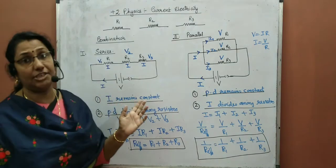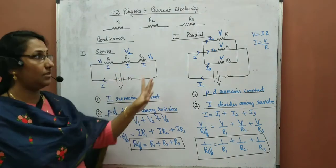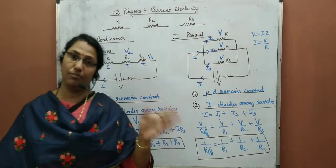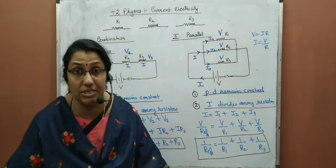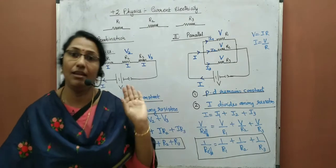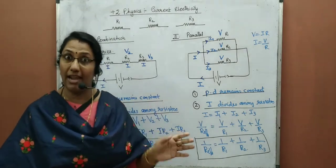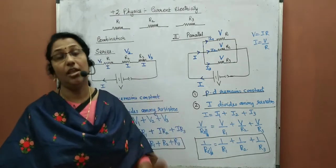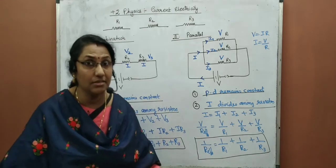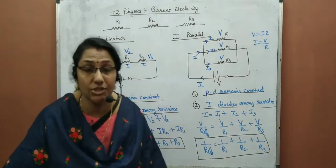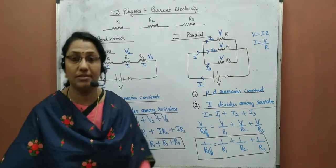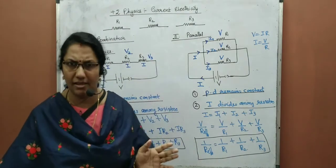To summarize: in series, current is the same, potential divides, and the effective resistance is R1 plus R2 plus R3. In parallel, potential difference is the same, current divides, and the effective resistance is given by 1/R_effective equals 1/R1 plus 1/R2 plus 1/R3. Pause the video and take notes.